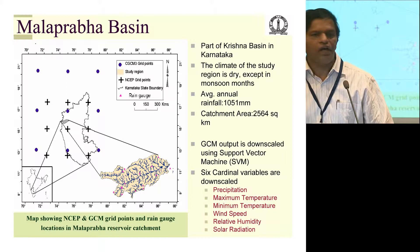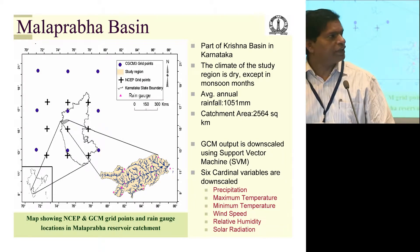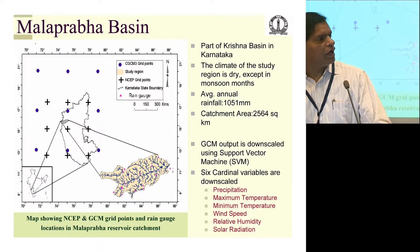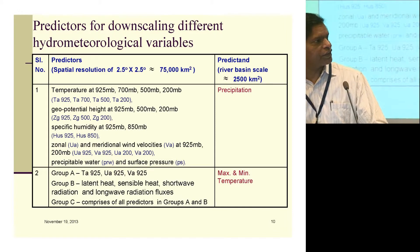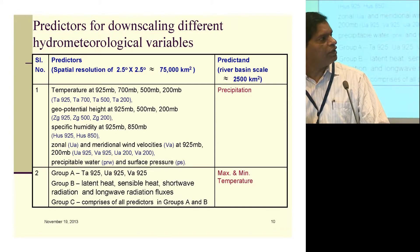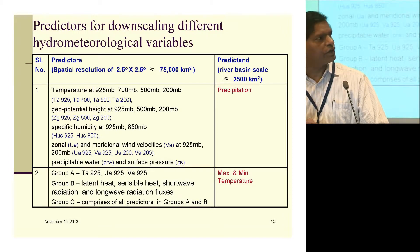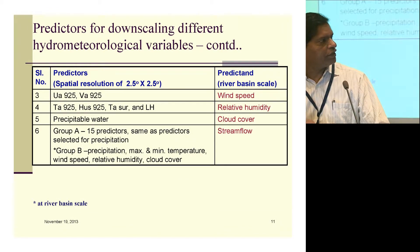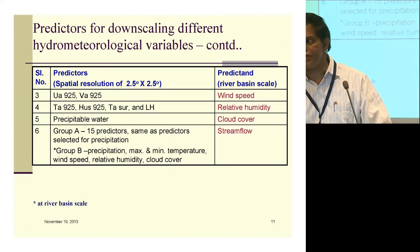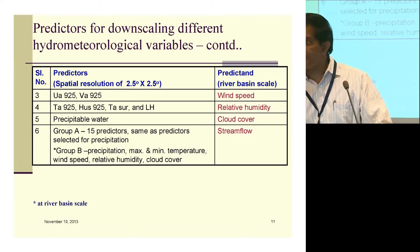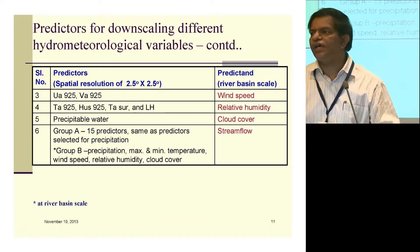For all these variables we tried to obtain information at a river basin scale on a daily as well as monthly time scale. For precipitation, the GCM output variables identified through statistical analysis are used to develop the relationship to precipitation at the river basin scale. Similarly, variables were identified for maximum and minimum temperature, and wind speed, to obtain basin-scale information for each variable influencing the hydrology of the river basin.